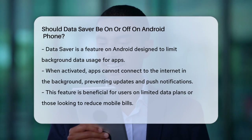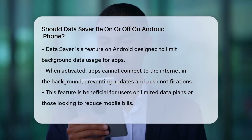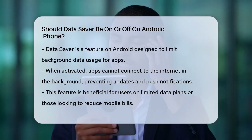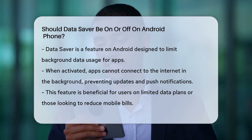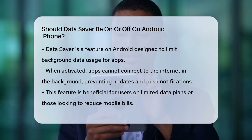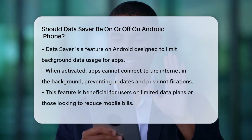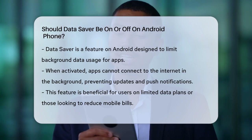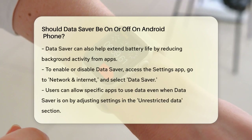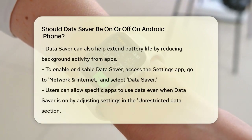First, let's talk about what DataSaver does. This feature is designed to limit how much data your apps can use in the background when you're not connected to Wi-Fi. When DataSaver is on, apps running in the background won't be able to connect to the Internet, which means they won't receive updates or send you push alerts, and they won't use any of your data. This can be really helpful if you're on a limited data plan or trying to save money on your mobile bill. It's also great for extending your battery life, since fewer apps updating in the background means less power usage.